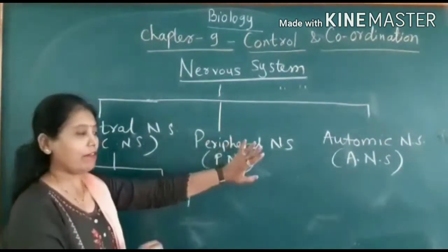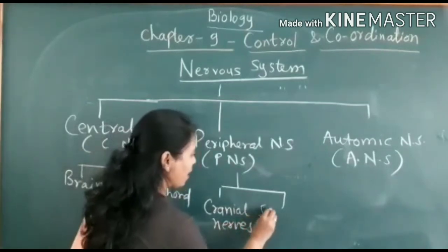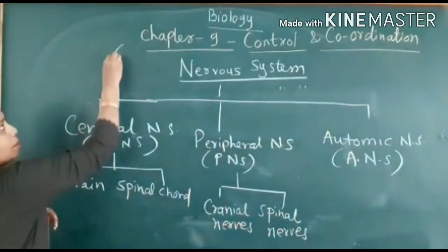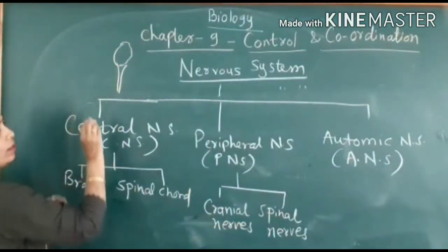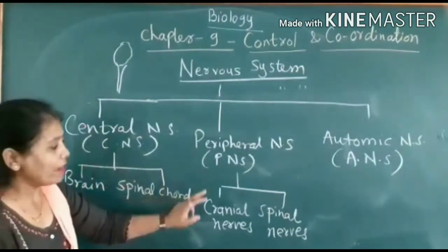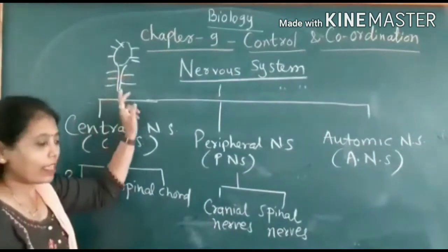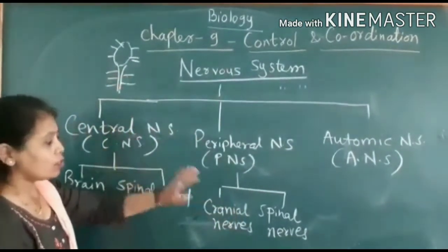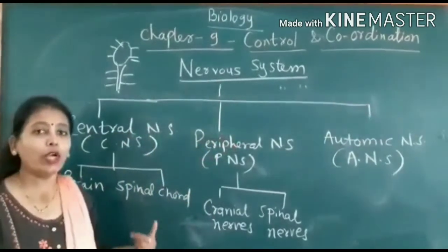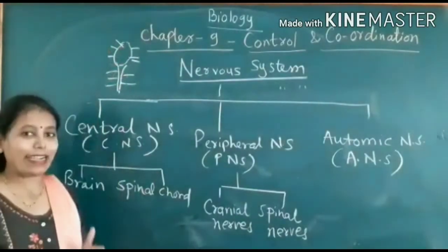The peripheral nervous system consists of cranial nerves and spinal nerves. The nerves arising from the brain are called cranial nerves, and the nerves arising from the spinal cord are called spinal nerves. It is called the peripheral nervous system because these nerves go towards the periphery. It is called the central nervous system because the brain and spinal cord are at the centre of the body.